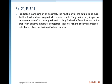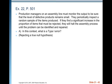Production managers on an assembly line must monitor output to be sure that the level of defective products remains small. They periodically inspect a random sample of items produced. If they find a significant increase in the proportion of items that must be rejected, they will halt the assembly process until the problem can be identified and repaired. In this context, what is a Type 1 error? It's rejecting a true null hypothesis. The alternative is that you now have a higher proportion of defectives than usual, so the null would be that it's the same as it's always been.